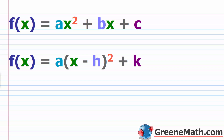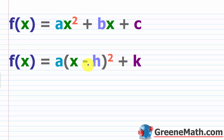We'll talk more about this in the next lesson. For now, we need to know how to convert between standard form and vertex form. Something like f(x) = ax² + bx + c, where a is the coefficient for x squared, b is the coefficient for x to the first power, and c is your constant term. Most textbooks will call this standard form.